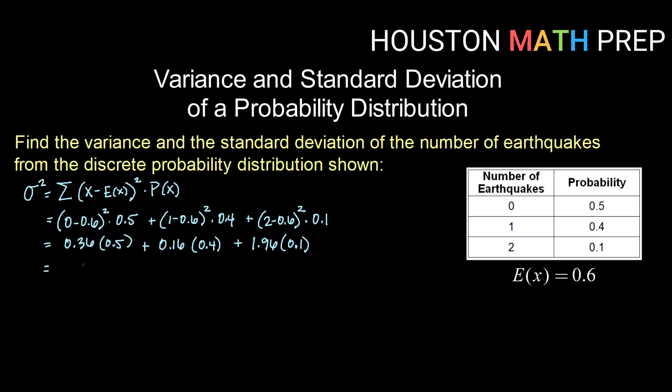Alright, doing that multiplication now. 0.36 times 0.5 is 0.18, 0.16 times 0.4 is 0.064, and 1.96 times 0.1 is 0.196. So adding all of that up, we get a variance of 0.44.